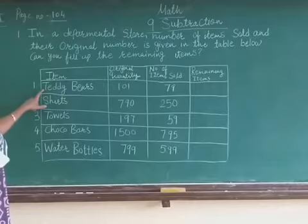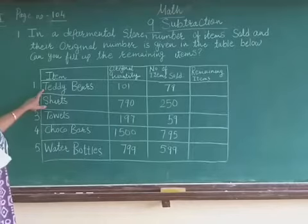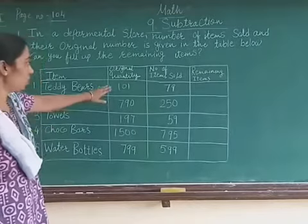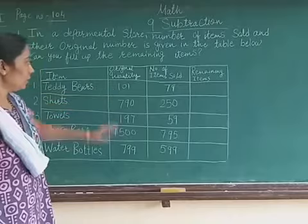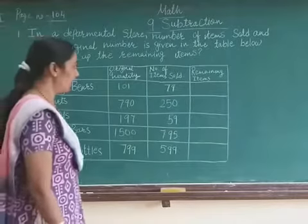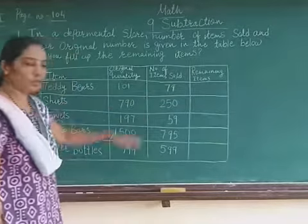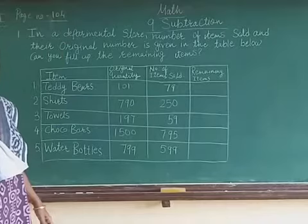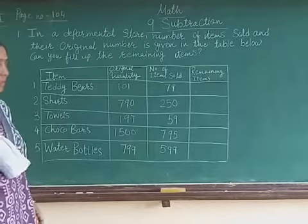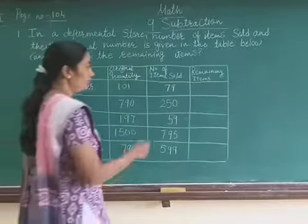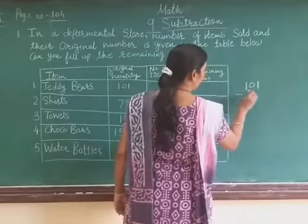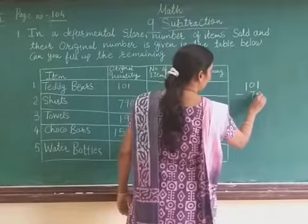The first item given here is the teddy bear. The teddy bear's original quantity is 101 and sold is 79. Let us subtract this: 101 minus 79.